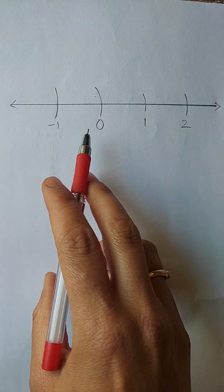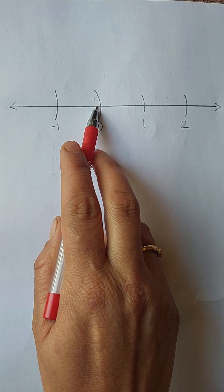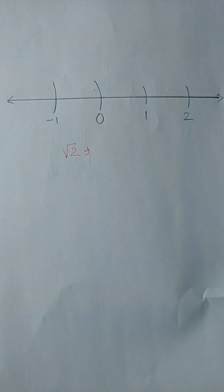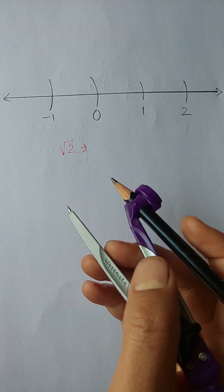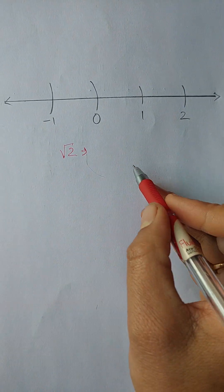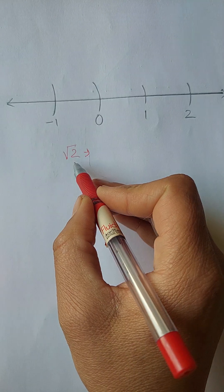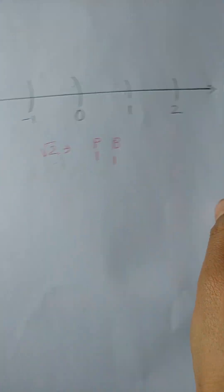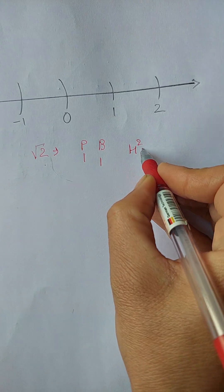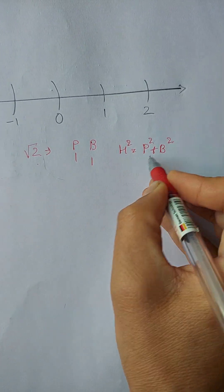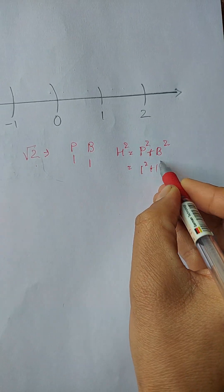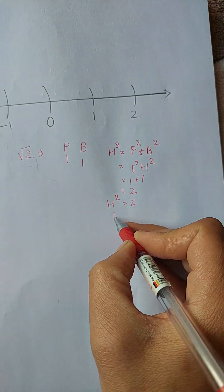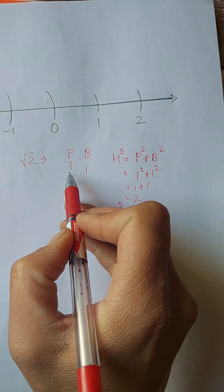Here I have a number line whose one unit is this much. I have to locate root 2 on this number line. For that, you need to construct a right angle triangle whose perpendicular is one unit and base is also one unit, because that will give you a hypotenuse of root 2 units. As per Pythagoras, one squared plus one squared equals one plus one equals two, so h squared is two, therefore h is root two.